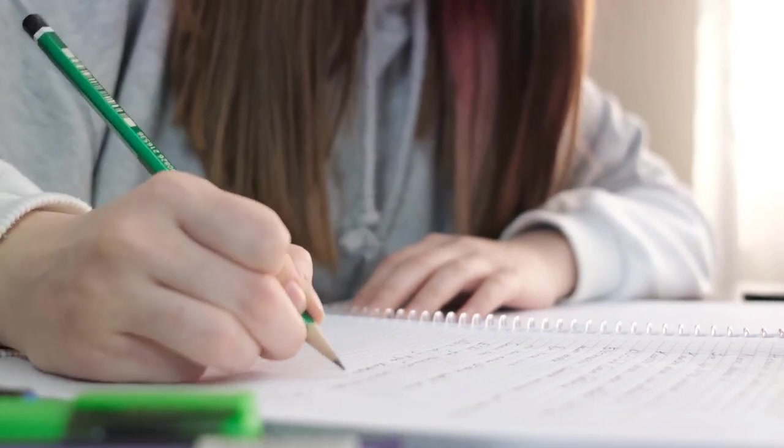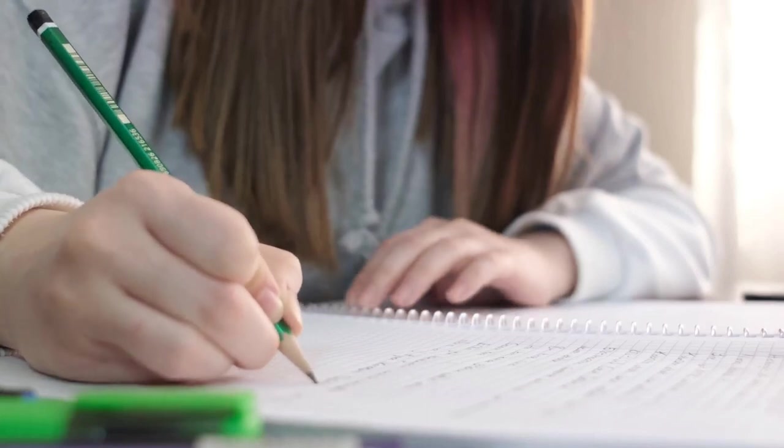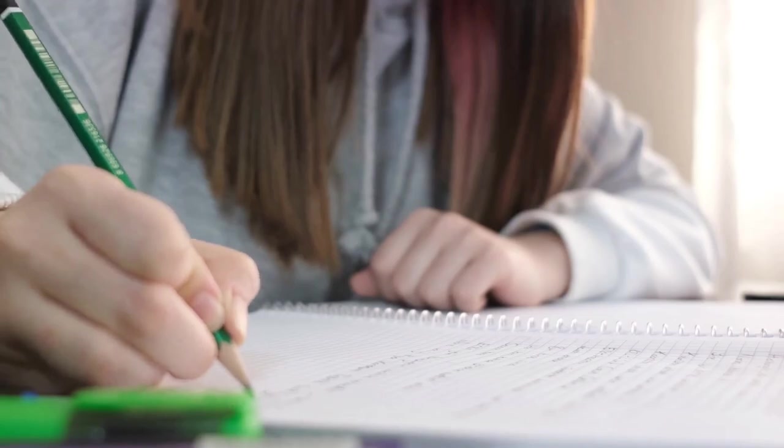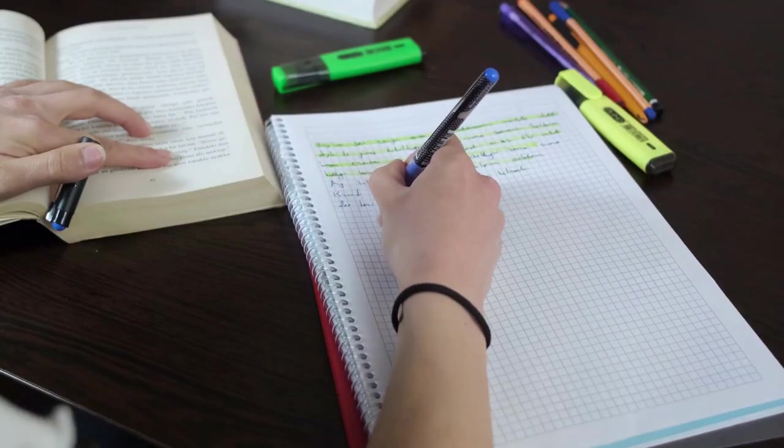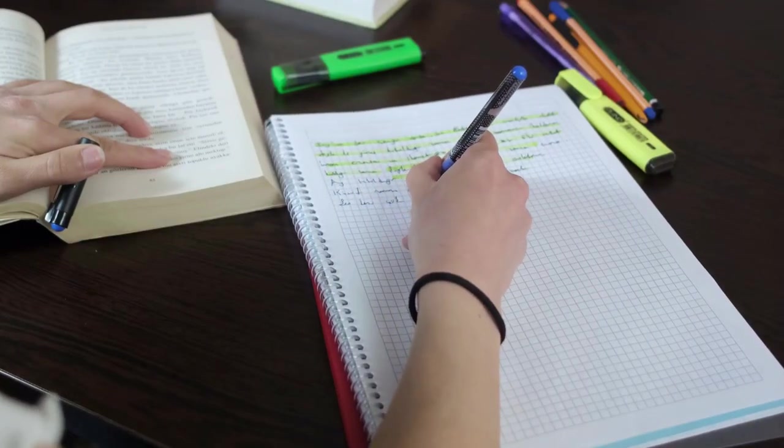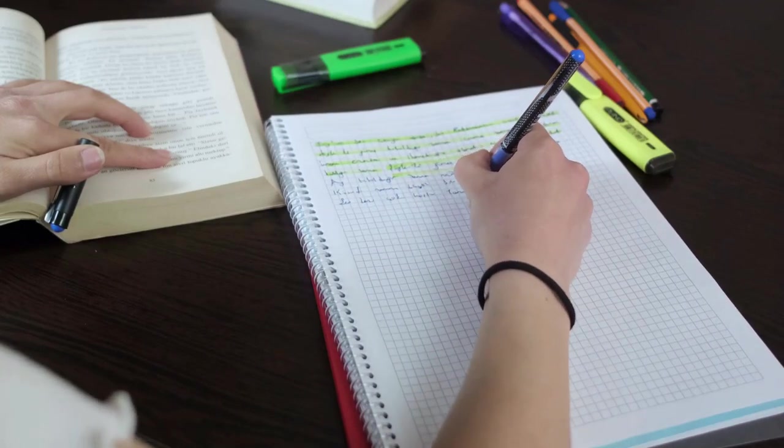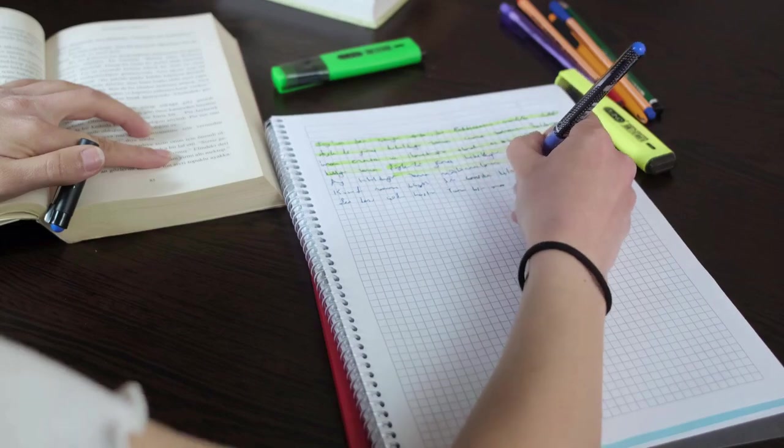Now let's dive into some specific active learning techniques. One of the most effective methods is summarizing information. After reading a section of your textbook or listening to a lecture, try to put what you've learned into your own words. This not only ensures you understand the content, but also makes it easier to remember. After all,